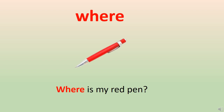The next word is 'where.' Children, generally we use 'where' to ask about some place or some object. Let's use where in a sentence: 'Where is my red pen?'